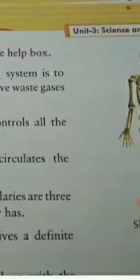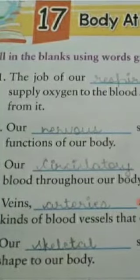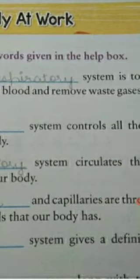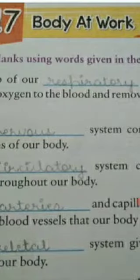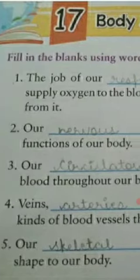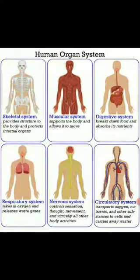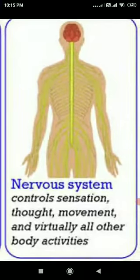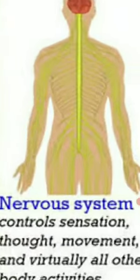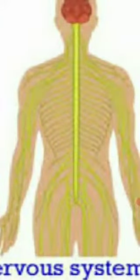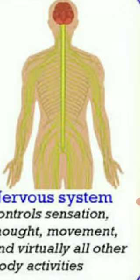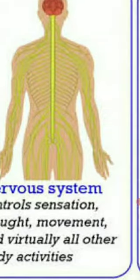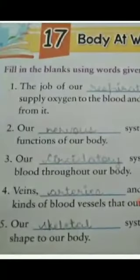Second one: our DASH system controls all the functions of our body. This is our nervous system — it handles control, sensation, thought, movement, and virtually all other body activities. So you have to fill here: nervous system.